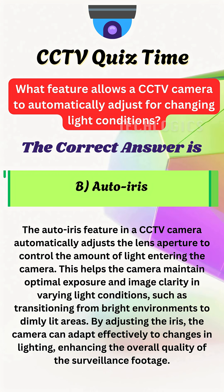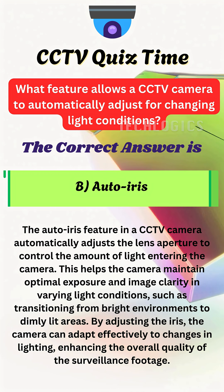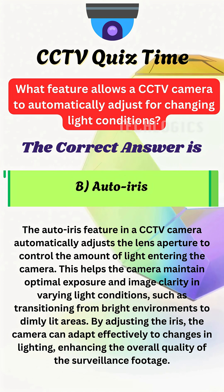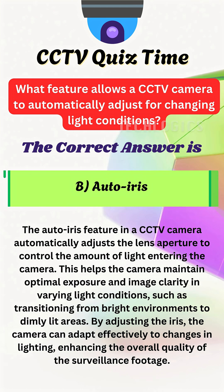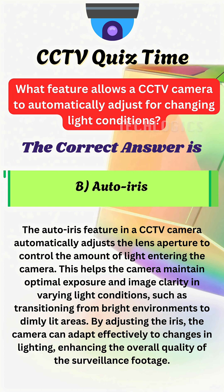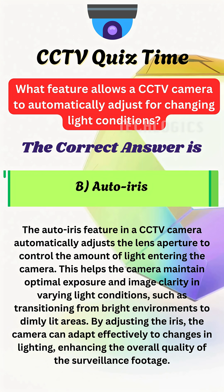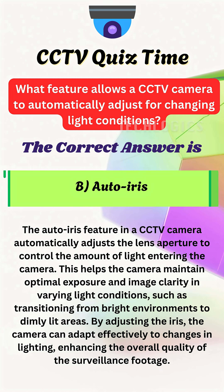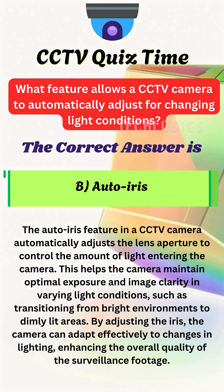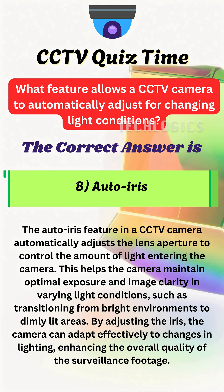The autoiris feature in a CCTV camera automatically adjusts the lens aperture to control the amount of light entering the camera. This ensures optimal exposure and image quality in environments with changing light levels, such as transitioning from bright outdoor sunlight to shaded or indoor areas. By dynamically adjusting the iris, the camera provides clearer footage with better visibility, significantly improving overall surveillance effectiveness.